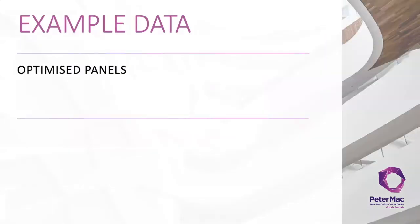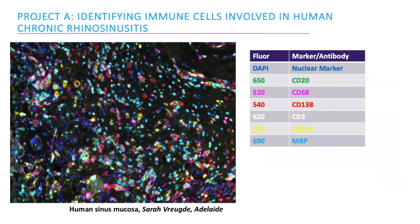Now I'd like to show you some seven-plex Opal panels which we have developed here in CALM for external researchers. This is an Opal panel we developed for a client in Adelaide who was interested in identifying and quantifying immune cell populations involved in chronic rhinosinusitis. We have B lymphocytes identified using a CD20 antibody shown in green, CD68 which was used to identify tissue macrophages, CD138 for plasma cells, CD3 for T lymphocytes, CD11C for dendritic cells, and NBP which was used to identify eosinophils.